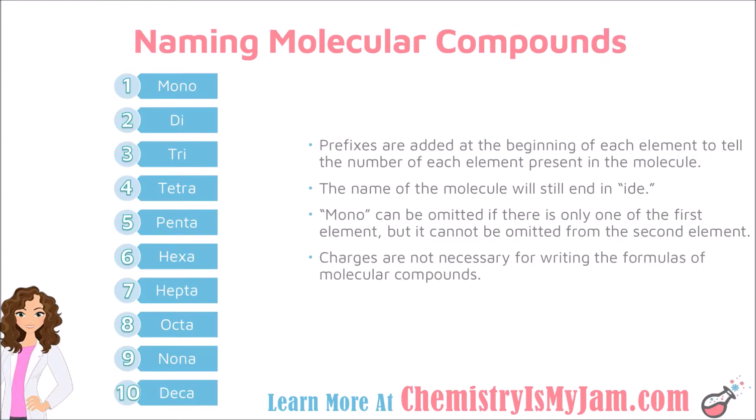Here you have the prefixes that are necessary to name molecular compounds. The prefixes for the numbers 1 through 10 are: mono, di, tri, tetra, penta, hexa, hepta, octa, nona, and deca. It would be a good idea to memorize those prefixes. Prefixes are added at the beginning of each element in the compound, and they tell you the number of each of those atoms present in the molecule.